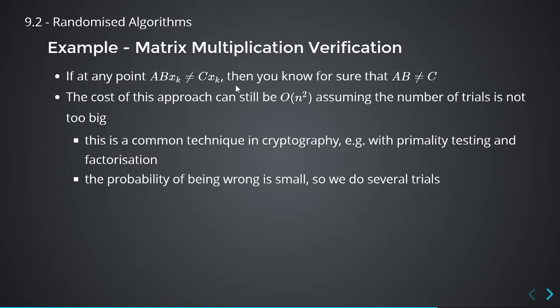That is probabilistic algorithms. The idea is: it's an algorithm which may not give you the right answer, but it has a good chance of giving you the right answer. Keep applying it until the probability of getting the right answer is high enough. You say: 'I'm 99% sure this is correct.' It's never 100%, unfortunately — but the amount of time needed to reach 99% is minuscule compared to getting 100%. This is a common technique in cryptography — primality testing, factorization, discrete log — where the probability of being wrong is so small.